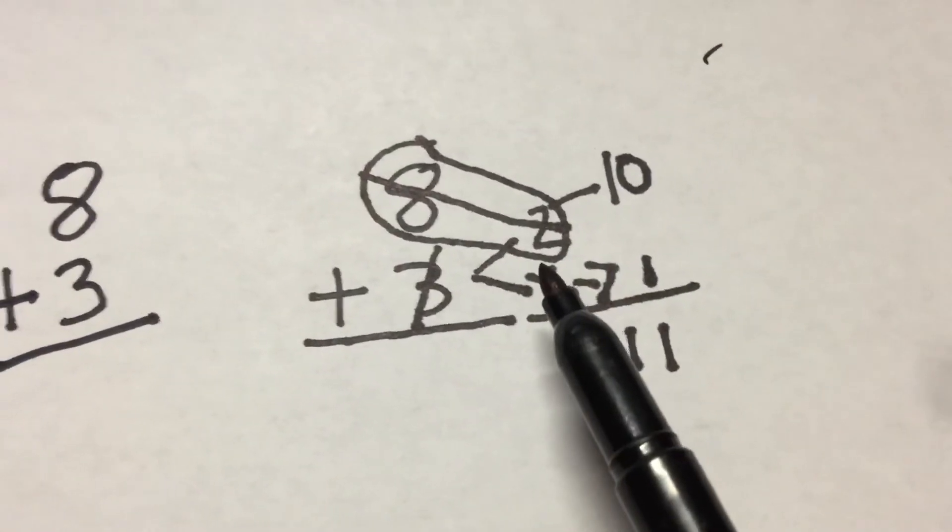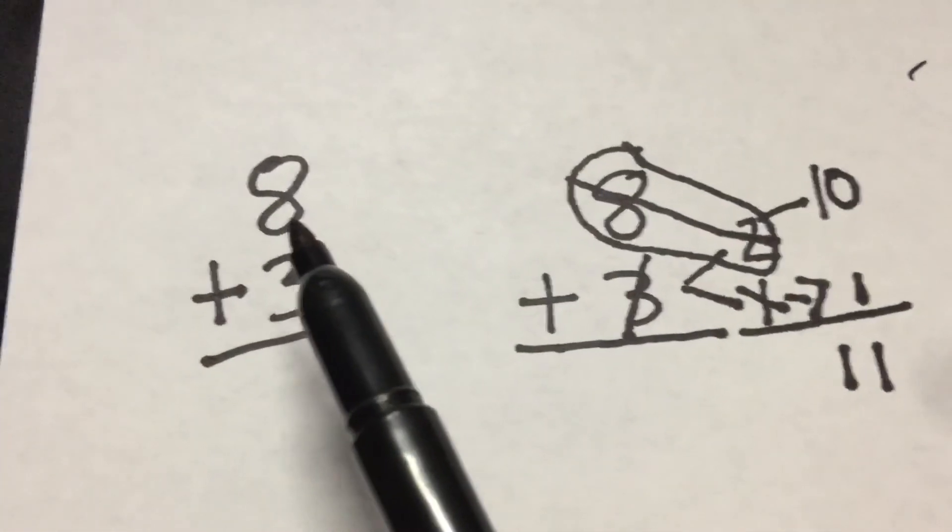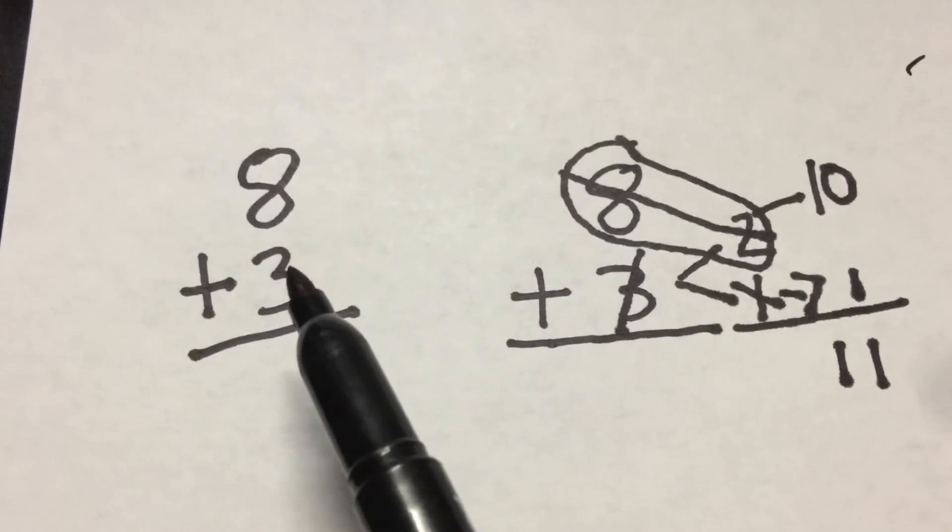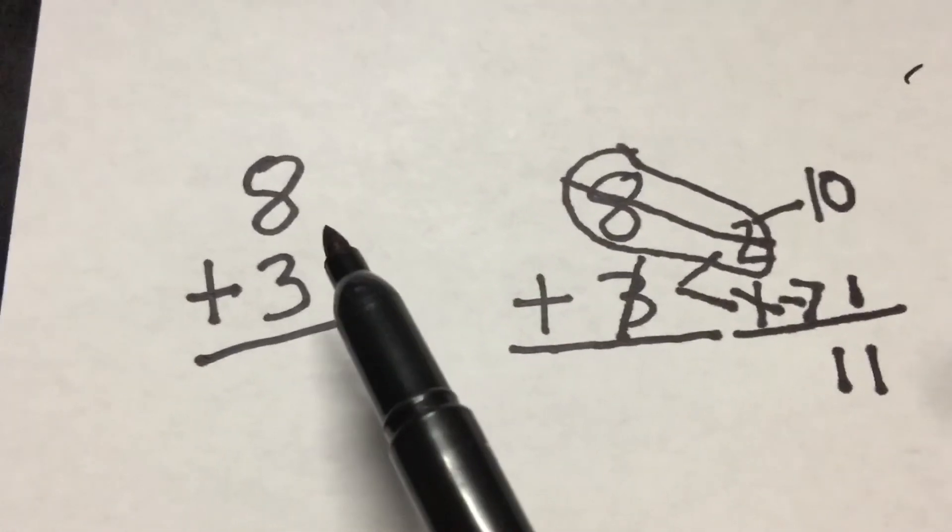So this is kind of drawing it out and kind of going the long way. And eventually the kids are going to understand how to compose and decompose so quickly that we kind of turn into doing it in our heads. So instead of counting on eight, nine, ten, eleven, we're going to have the kids decomposing: eight plus two is ten plus one more is eleven.